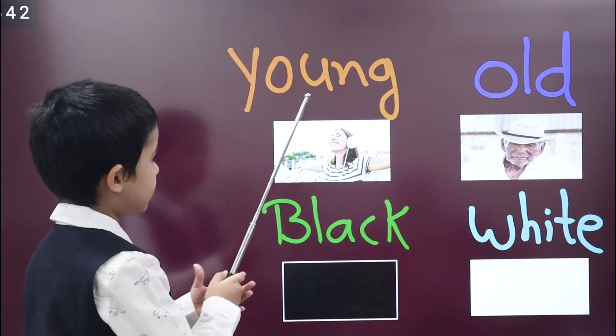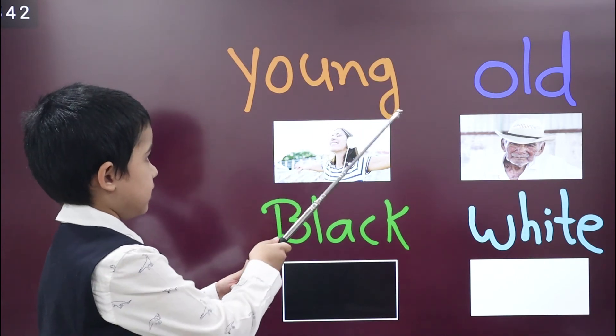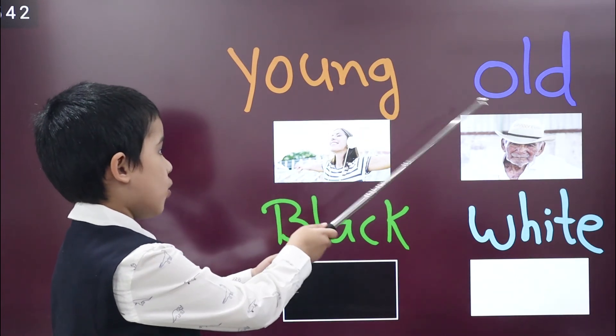Next word is young. This girl is very young. Opposite of young is old.